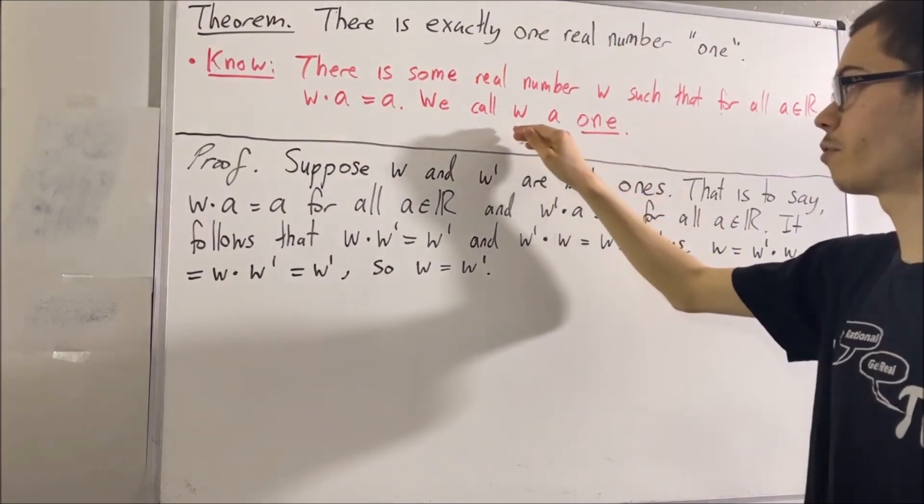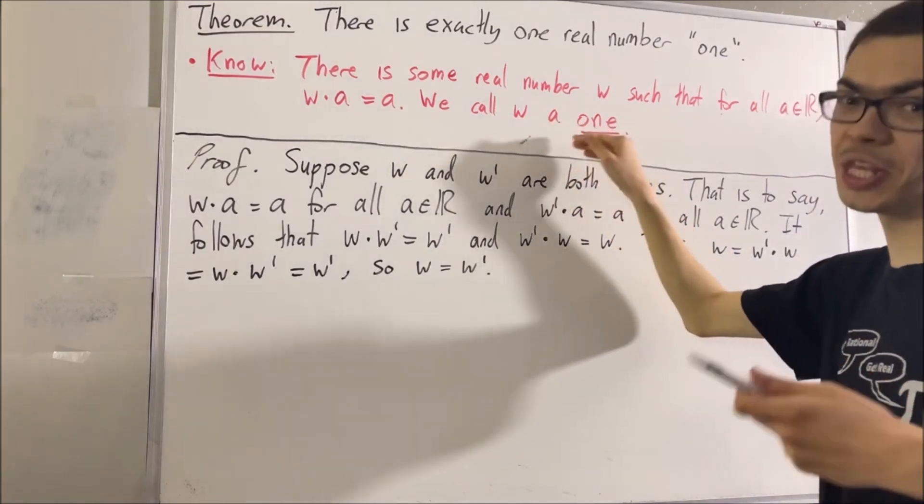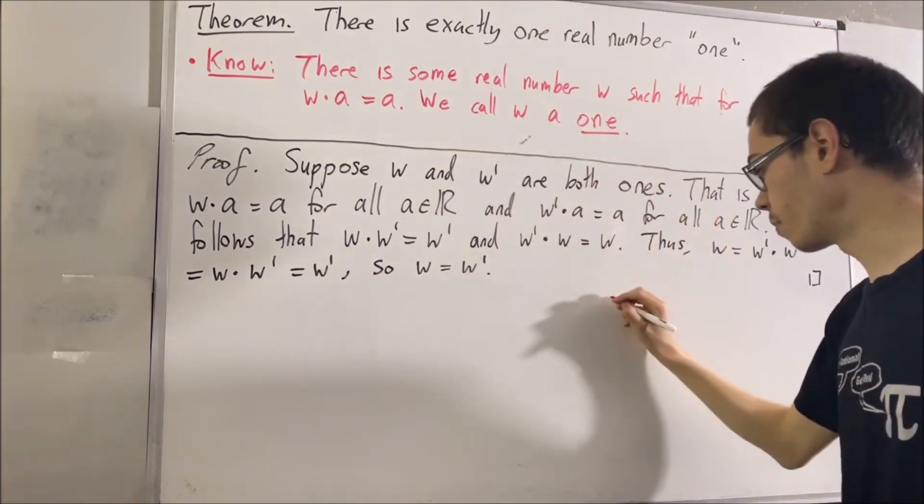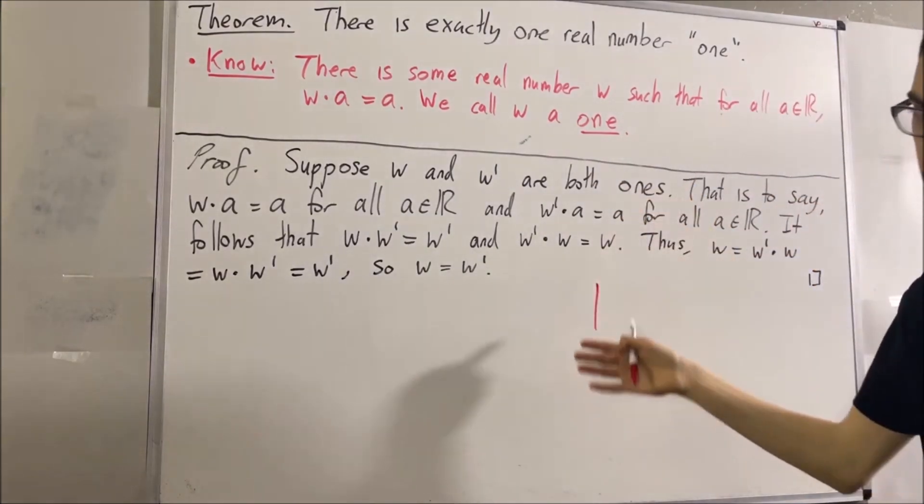But rather than referring to w as a number one, we might as well call w the number one. And instead, we'll denote the number one by the symbol, which is just like a vertical line, which we all know, right?